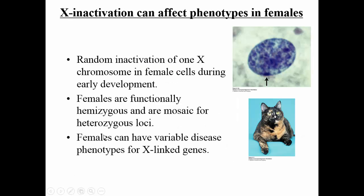In humans, there's something called X inactivation, which is very interesting. If a human female has two X chromosomes and a male only has one X, there's a problem because there are genes located on the X chromosome — either women have twice as many, or males have one too few. What happens is one of the X chromosomes in females is randomly inactivated, so functionally, females are hemizygous — meaning only one of the chromosomes is expressed.